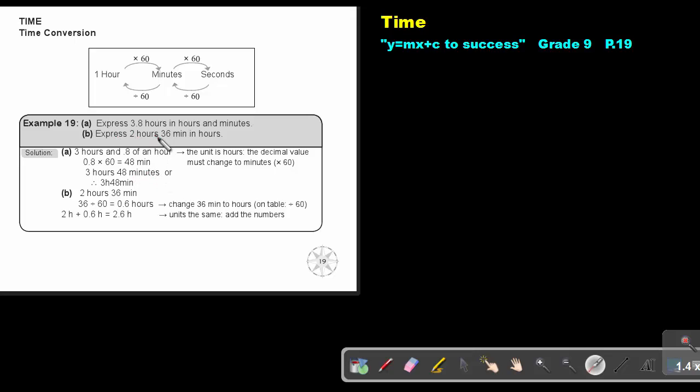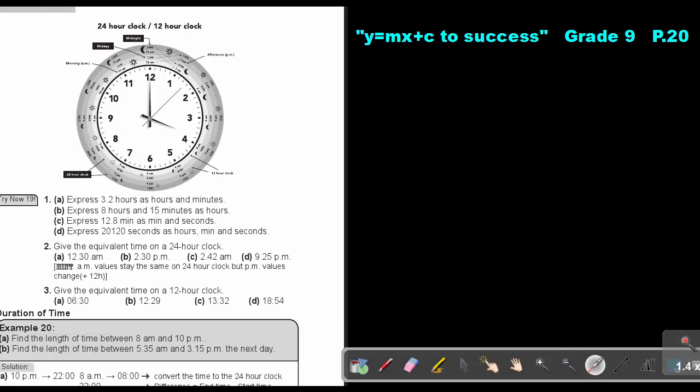Express 2 hours and 36 minutes in hours. This is already in hours, but I want to take this 36 minutes to hours. Now if I want to move from minutes to hours, I must divide by 60. So it's 36 divided by 60. That is 0.6 hours. And then I basically just take the 2 hours and I add the 0.6 hours. And that will give me 2.6 hours.